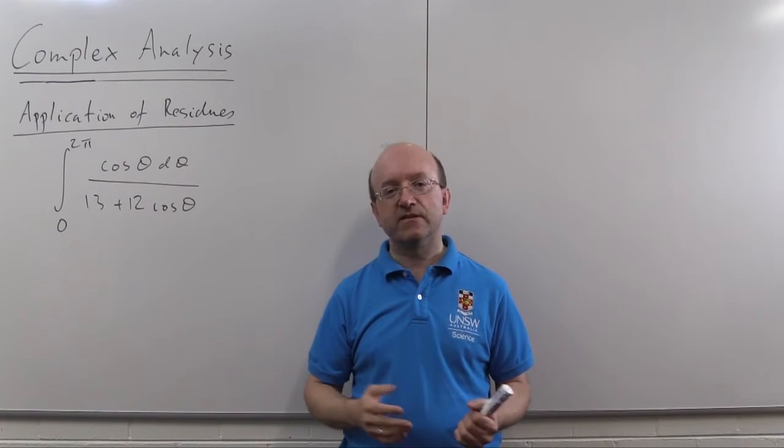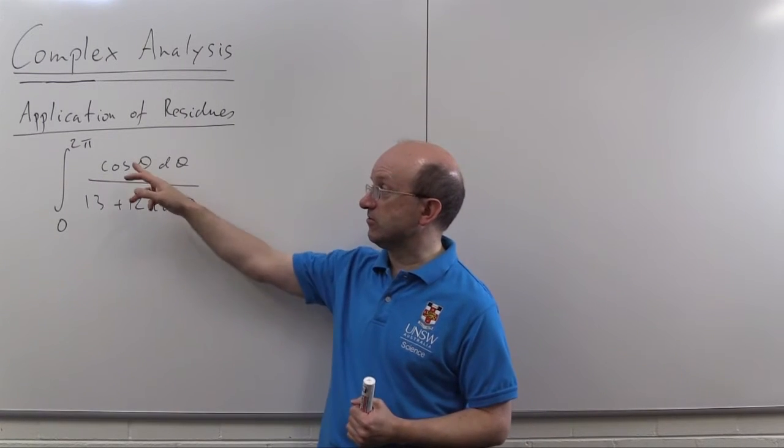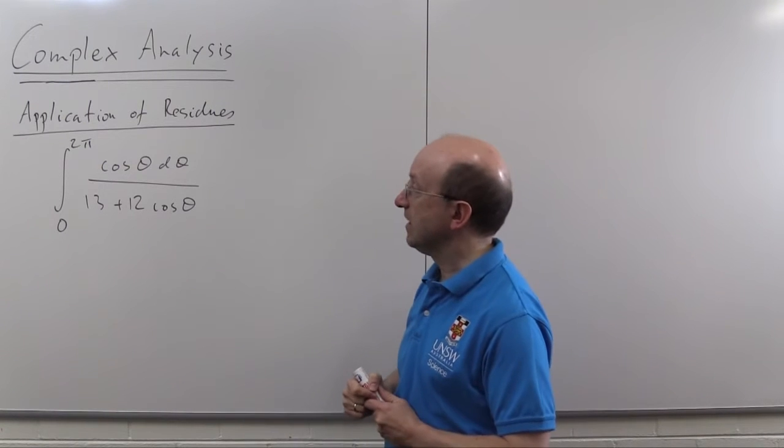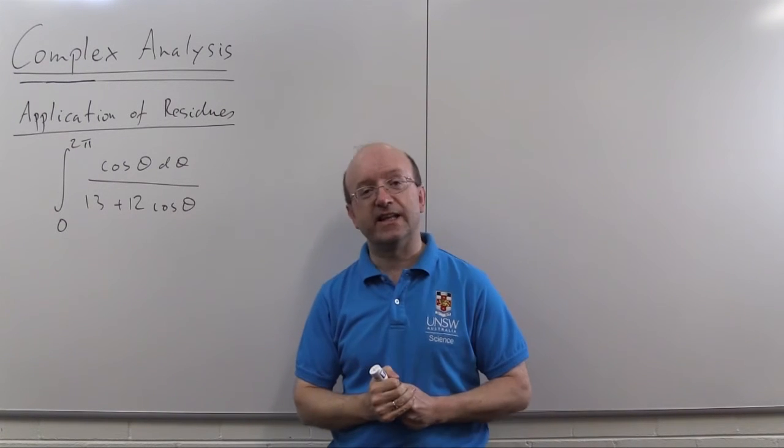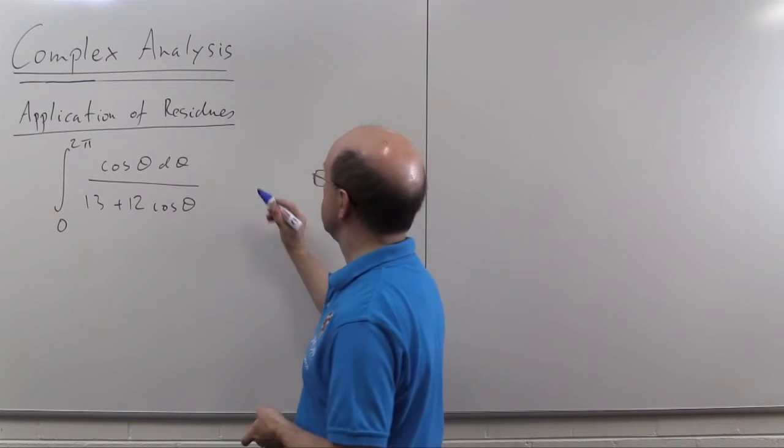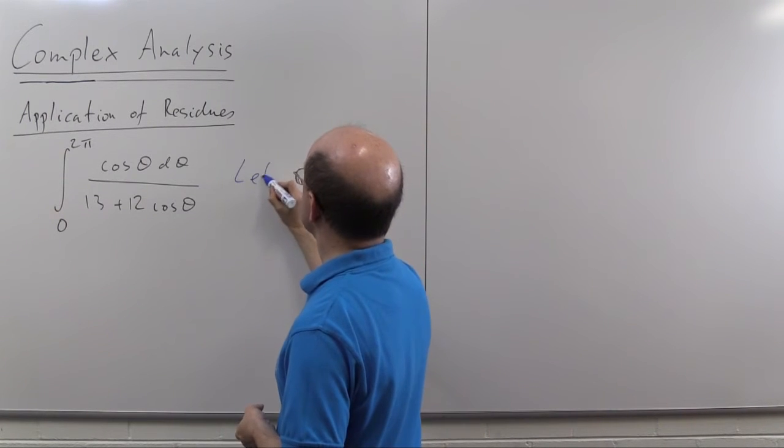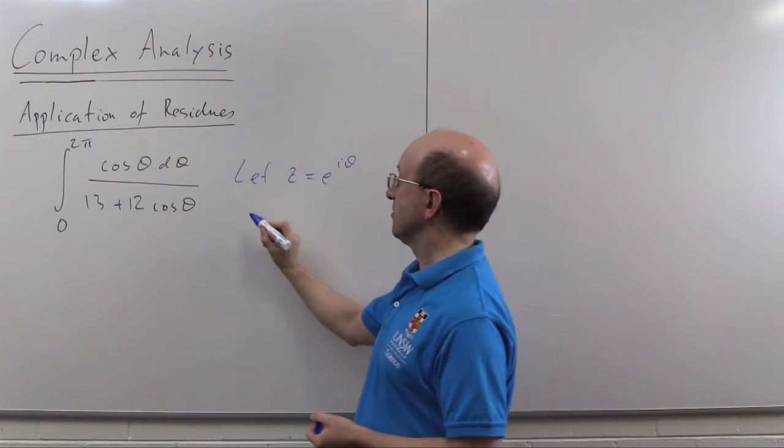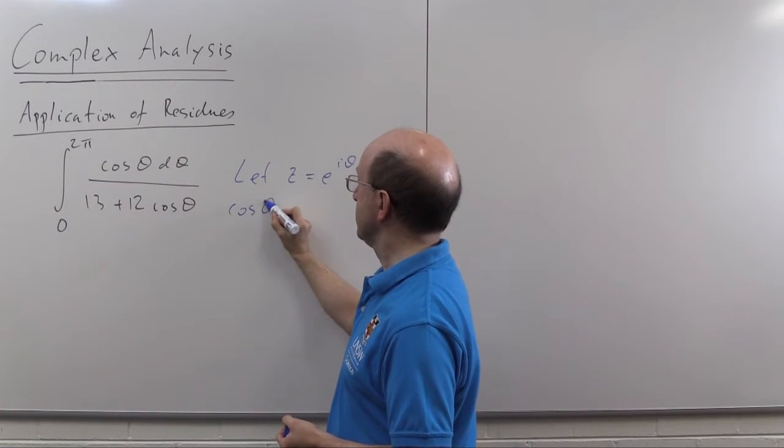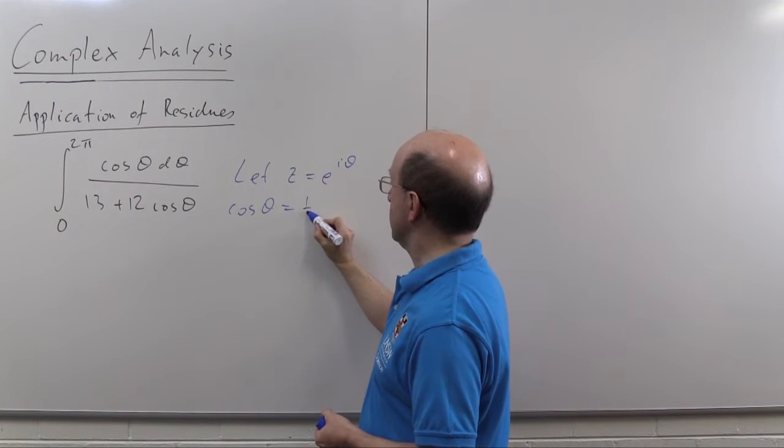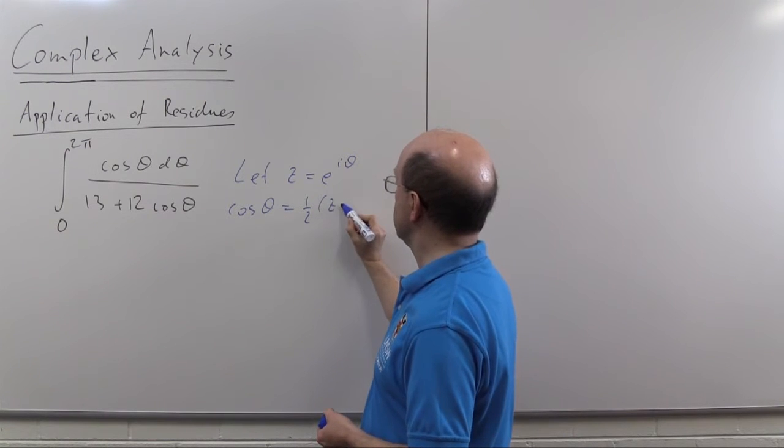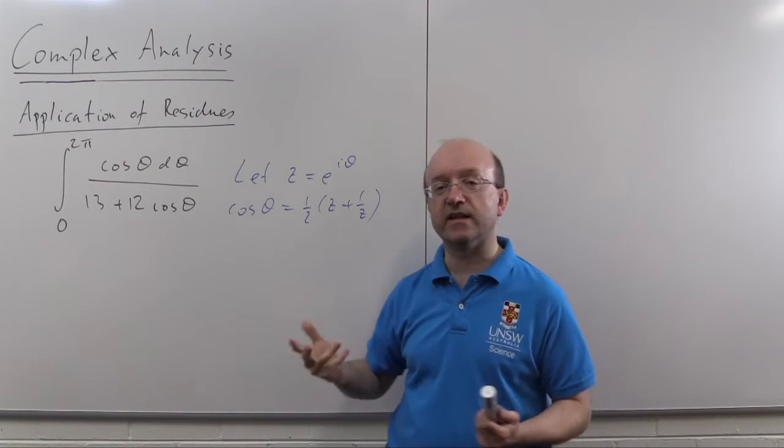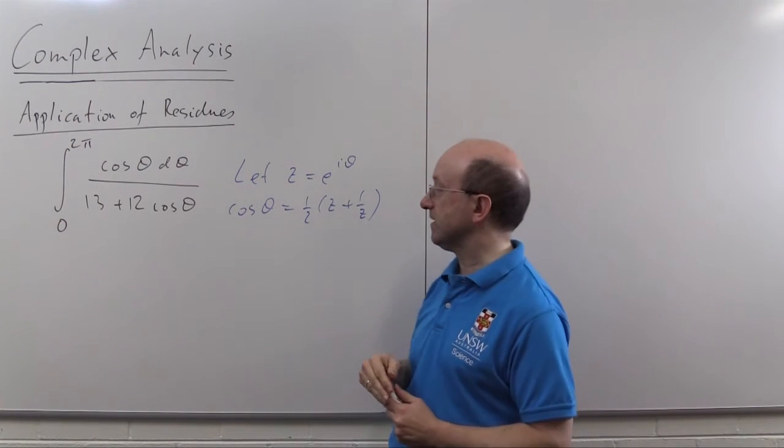Now the technique for these integrals, integral over zero to two pi of these rational functions of sines and cosines, is to let z be e to the i theta. It follows then that cos of theta is one half, well it's z plus one upon z, because cos theta is e to the i theta plus e to the minus i theta.